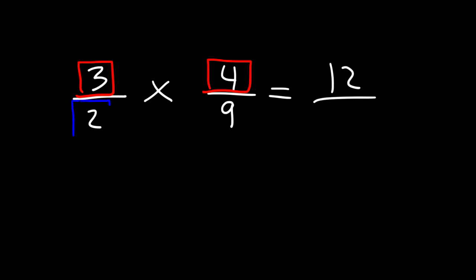Now let's try some examples where we have to simplify the final answer. So let's multiply 3 over 2 by 4 over 9. Go ahead and try this. 3 times 4 is 12. And 2 times 9 is 18. So we get 12 over 18. How can we reduce that fraction? Both of these numbers are even so we can divide 12 and 18 by 2.